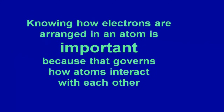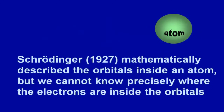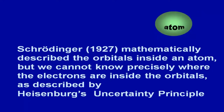The arrangement of electrons determines how atoms interact with each other. Schrödinger, building on Heisenberg's uncertainty principle as well as de Broglie's idea that electrons can act as waves, created a mathematical model that described these orbitals inside an atom — these shapes, these high probability clouds. But we cannot know precisely where the electrons are inside the orbitals, and again, that comes from Heisenberg's uncertainty principle.